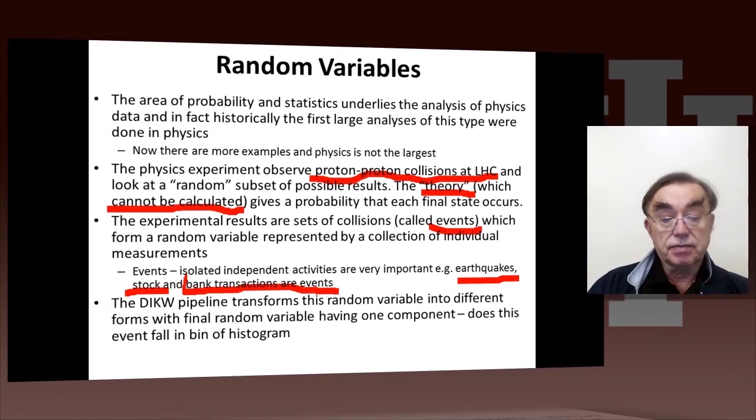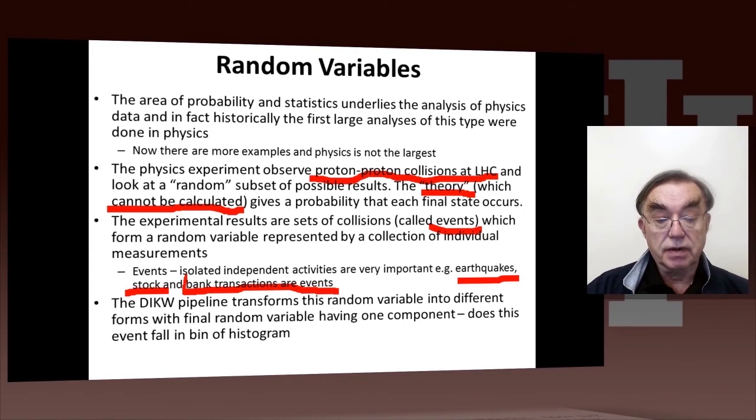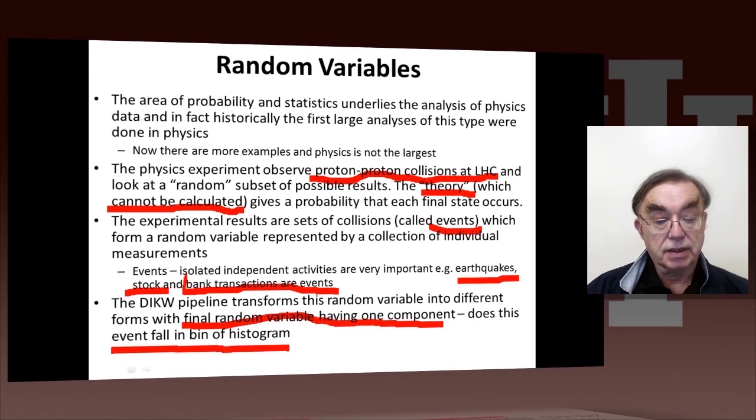In each case when we have these events, we have a data, information, knowledge, wisdom pipeline that tends to take these random variables which are associated with events and transform them from one form into another. And in the case of the physics, the final random variable is, just as one component, does the event fall in a particular bin of a histogram? That's what they will get.